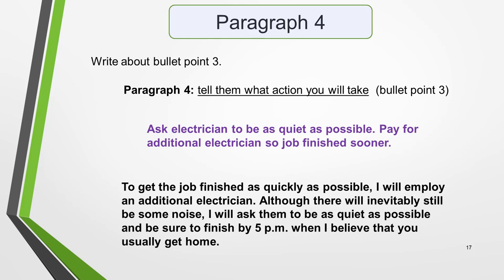Paragraph four addresses the third bullet point, which is to tell them what action you will take. My idea is to ask the electrician to be as quiet as possible and to pay for an additional electrician so the job will be finished sooner. You could write something like this: 'To get the job finished as soon as possible, I will employ an additional electrician. Although there will inevitably still be some noise, I will ask them to be as quiet as possible and be sure to finish by 5 o'clock, when I believe that you usually get home.' Now we just need to add the sign off we decided on earlier, and our letter is complete.